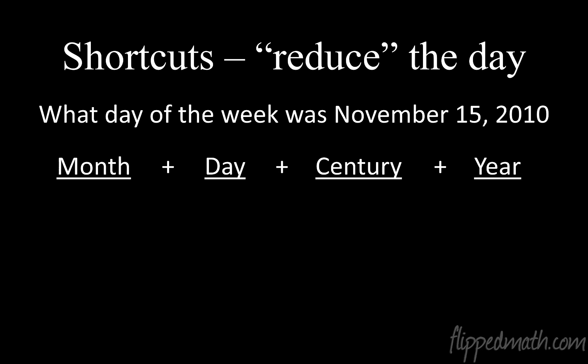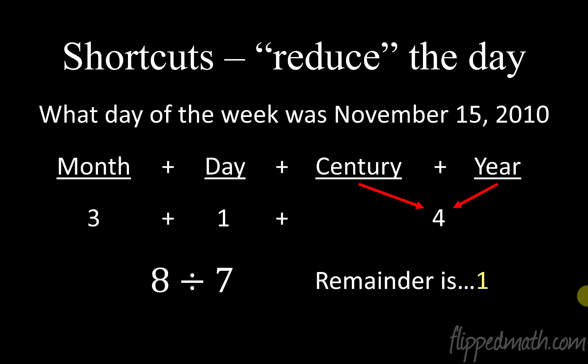Let's do another shortcut example: November 15th, 2010. November — three syllables — is 3. The day is 15, but instead of using 15, I think of it as 1, because 15 is one more than 14, and 14 is divisible by 7, so 15 has a remainder of 1. Century and year is 4. Combine: 3 plus 1 plus 4 equals 8. Divide by 7 — remainder is 1. That's a Monday.